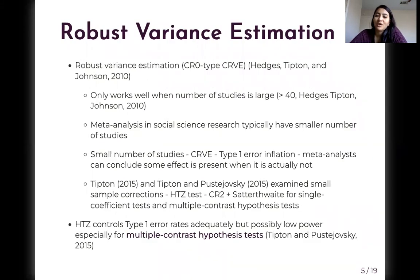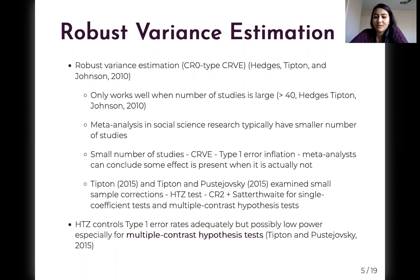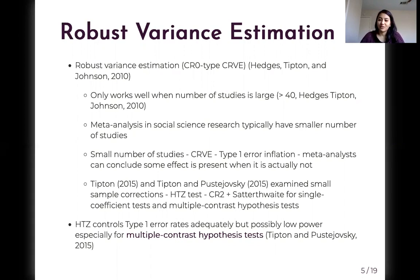Hedges, Tipton, and Johnson in 2010 introduced another method called Robust Variance Estimation (RVE), which doesn't require knowledge of correlations between effect sizes, but uses sandwich estimators to estimate the variance. However, studies have shown that RVE only works well when the number of studies is large — Hedges, Tipton, and Johnson in 2010 suggested over 40 studies are needed.